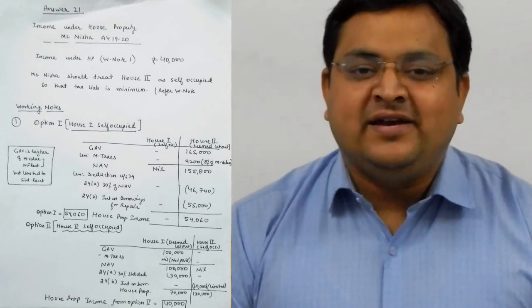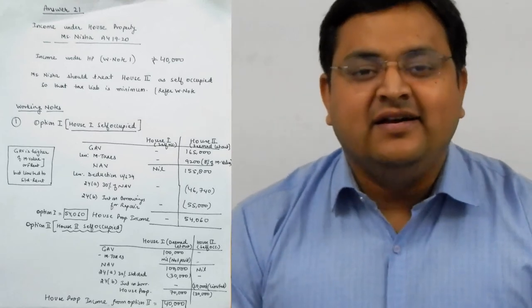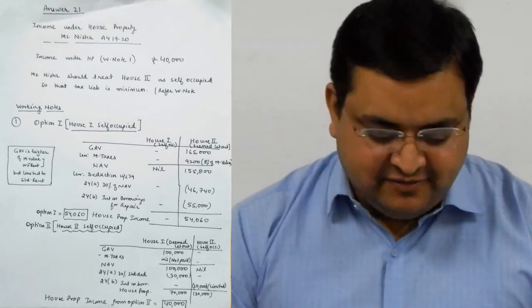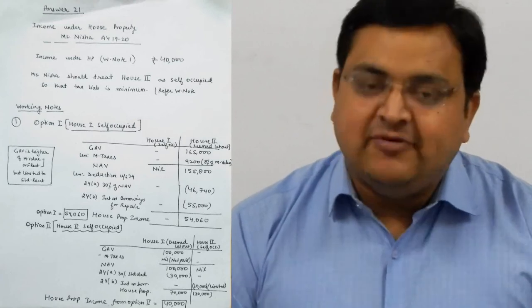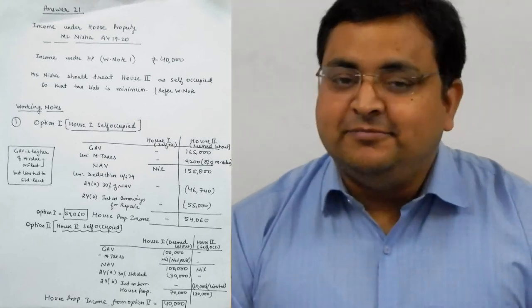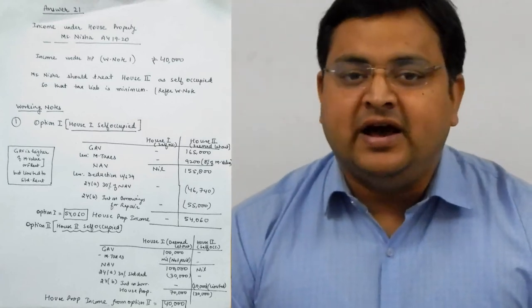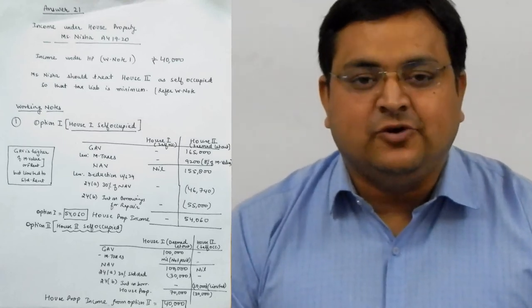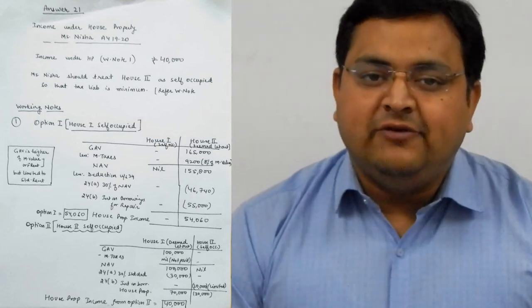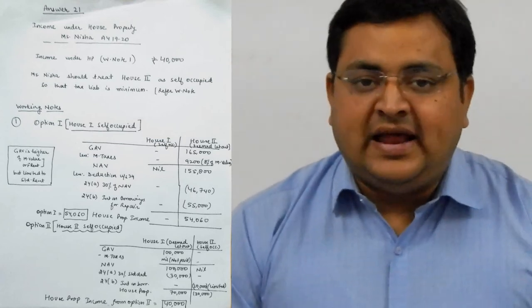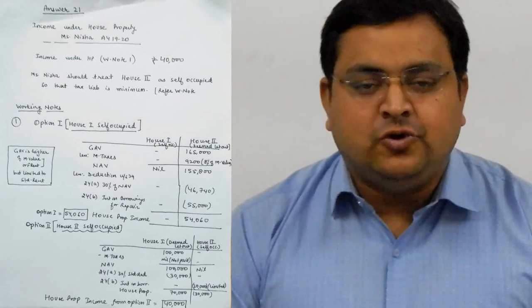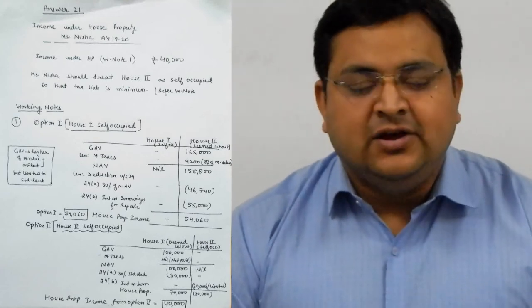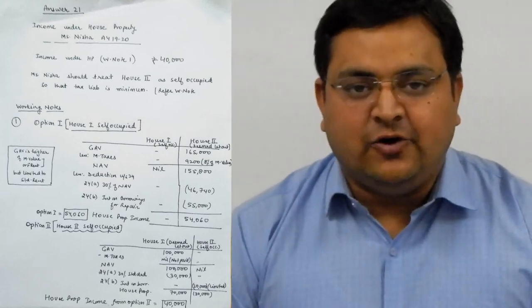Municipal value or fair rental value whichever is higher compared to standard rent whichever is lower, which will be 1 lakh rupees. Municipal taxes are not paid, so the deduction will not be made. NAV will be 1 lakh. 24A deduction, 1 lakh 30%, is 30,000 rupees. 24B - there is no interest, so your income is 70,000.